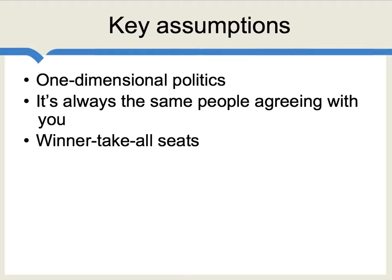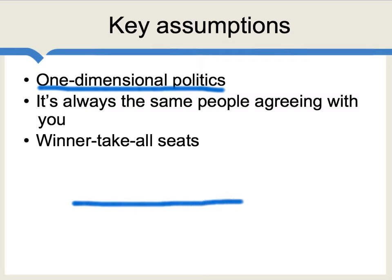Consider a simple model of what is sometimes called one-dimensional politics. One-dimensional politics means you can arrange people's views on a line, where here is the left wing, here is the right wing, and here are individuals in the center. Anyone's views fall somewhere on this line — extreme left, center, or on the right.